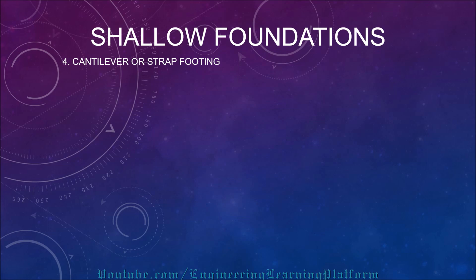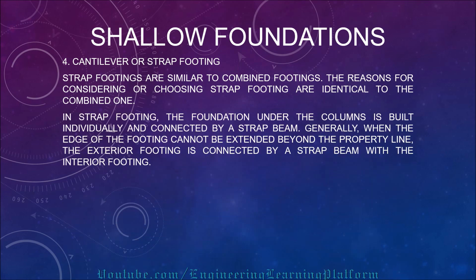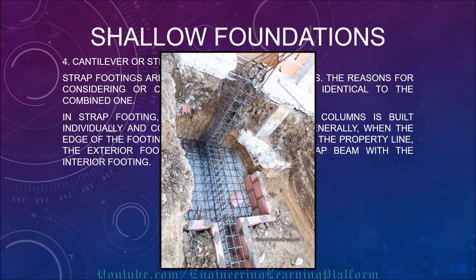The fourth type of shallow foundation is cantilever or strap footing. Strap footings are similar to combined footing, and the reasons for choosing strap footing are identical to the combined one. In strap footing, the individual foundations under each column are connected by a strap beam. Generally, when the edge of a foundation cannot be extended beyond the property line, the exterior footing is connected by a strap beam to the interior footing. A picture shows a strap beam connecting an eccentric column's isolated footing to a neighboring footing to provide balance.